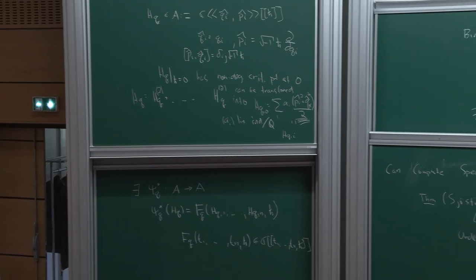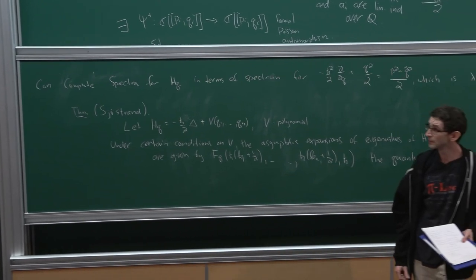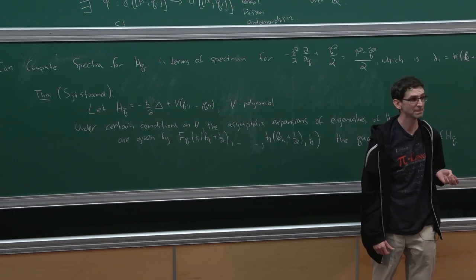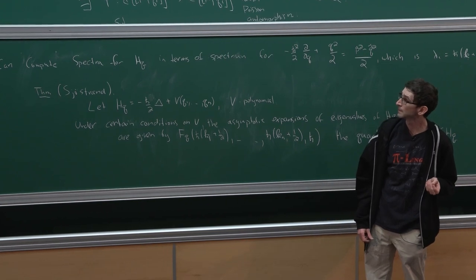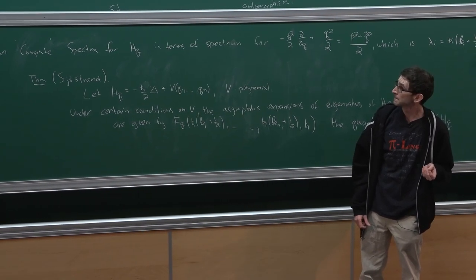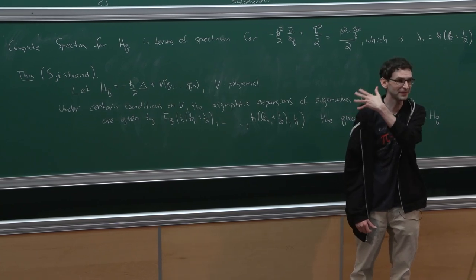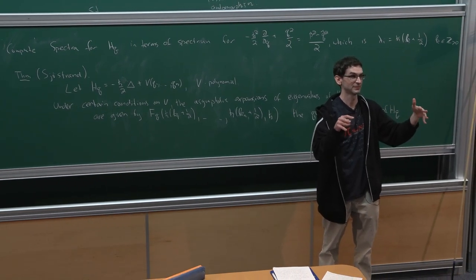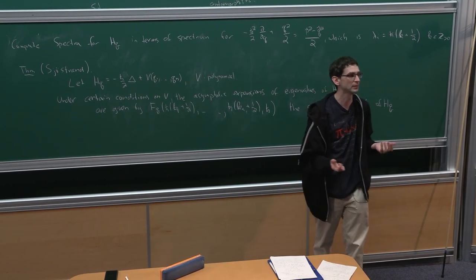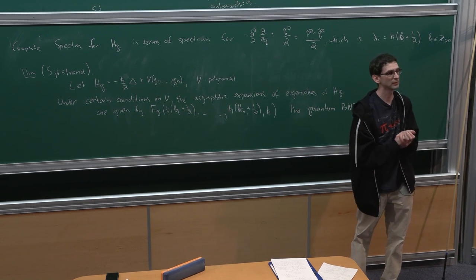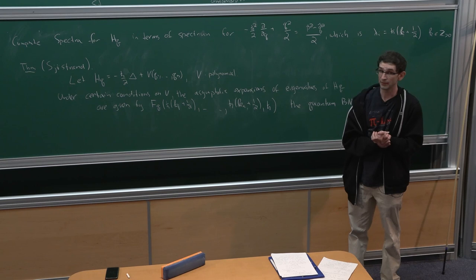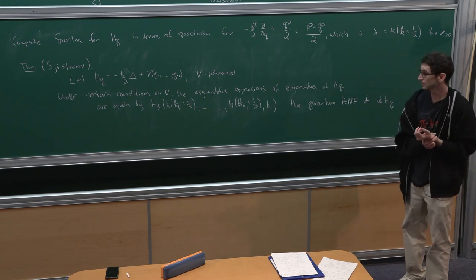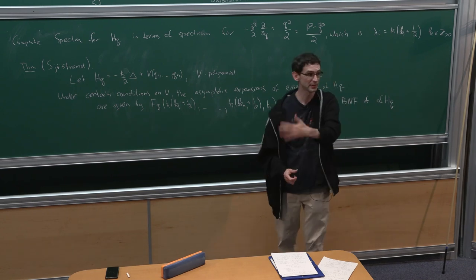A question: before, you wanted each direction to have a different coefficient — the A_i linearly independent over Q — but here they all seem to be 1. This is a specific application where you get the actual answer. The normal form exists independently. The conditions on V are of the same nature — there is a non-resonance condition meaning the A's are linearly independent — and there are additional conditions beyond that.